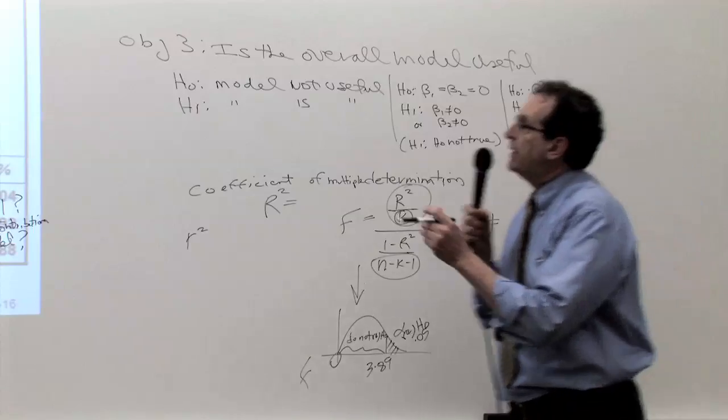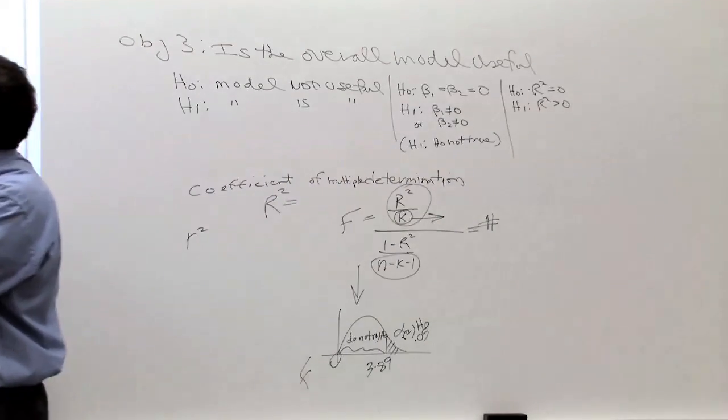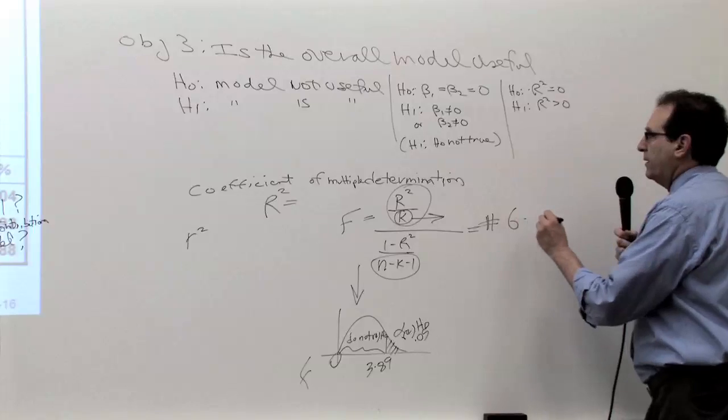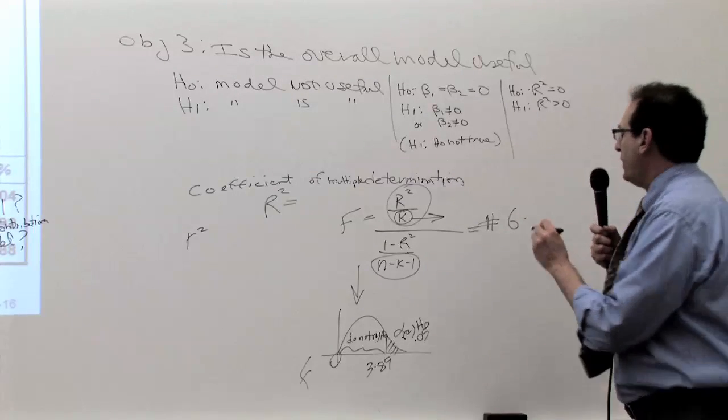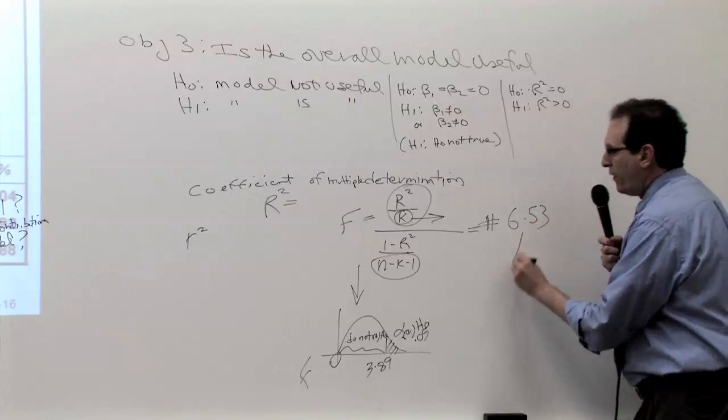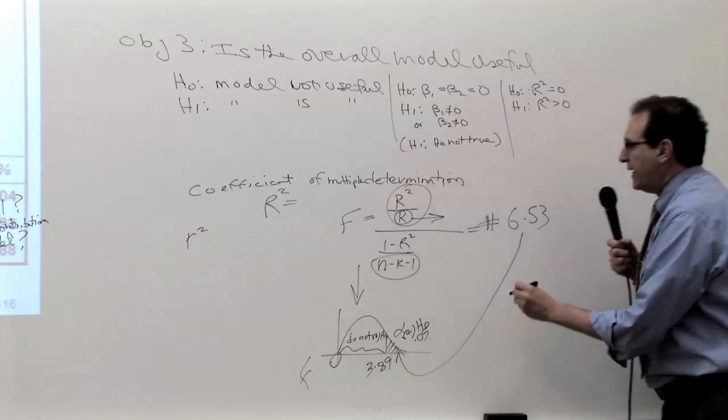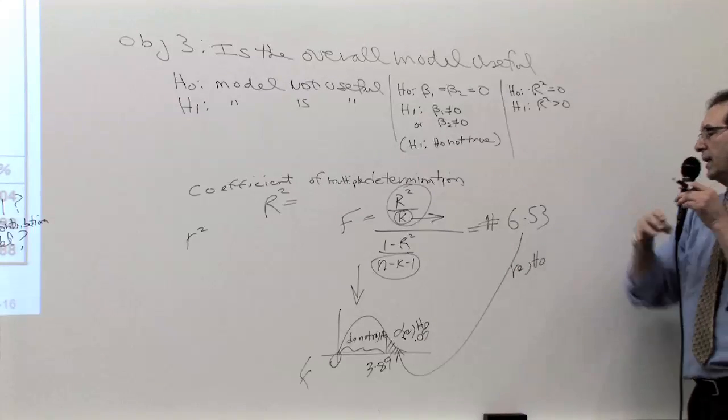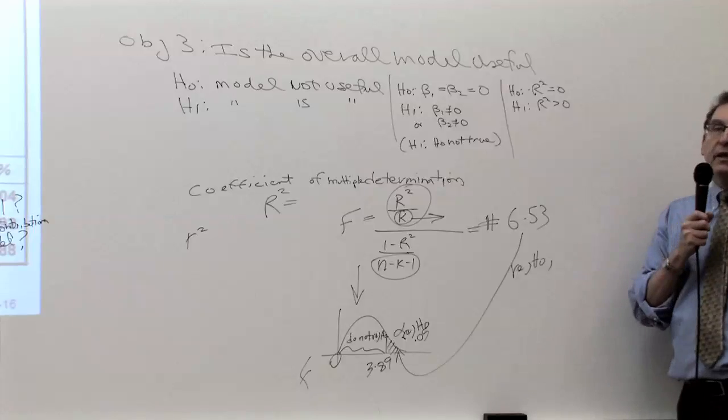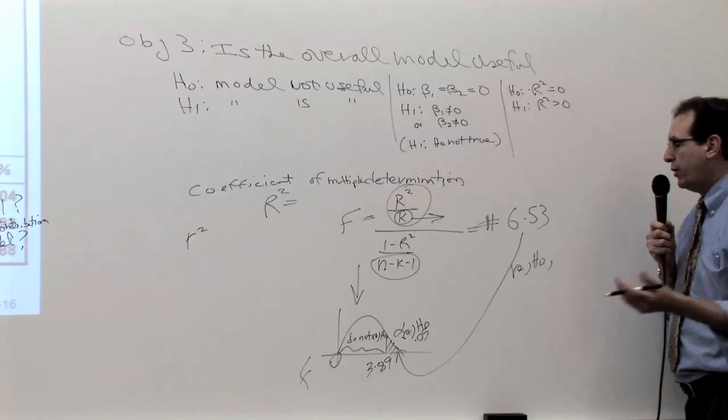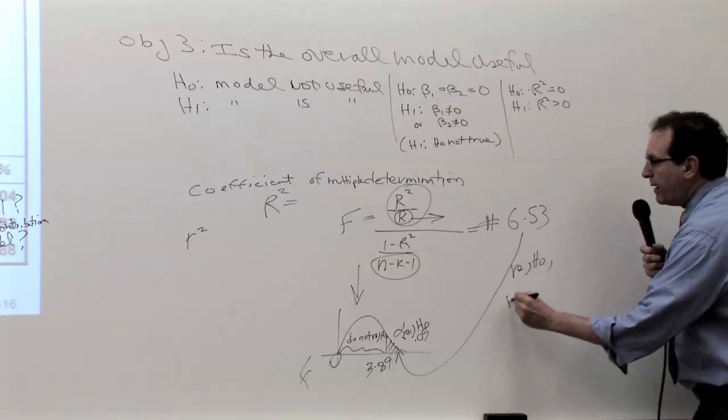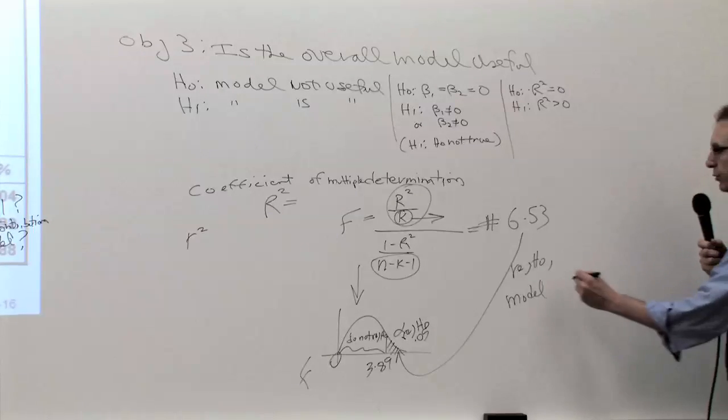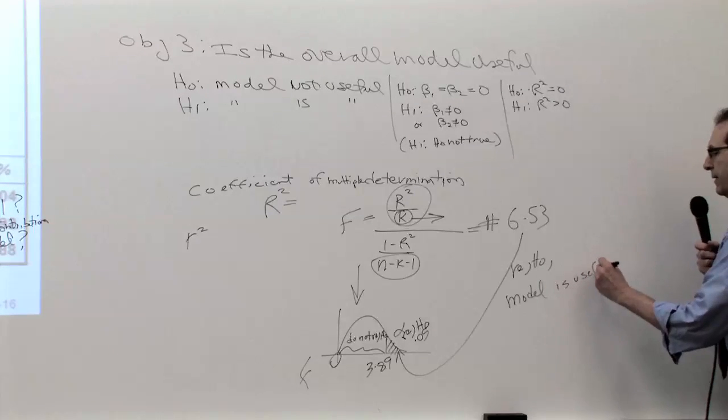And of course, in our case, since the F number came out to 6.5, and I'll put it down for the people who don't have that, 6 point, what do they say? 6.53. And 6.53 is to the right of that. The answer, first of all, is reject H0. And of course, like always for next, for another set of points, to interpret that, so the model is useful. If the question might say, is there evidence the model is useful? Yes, the model is useful.